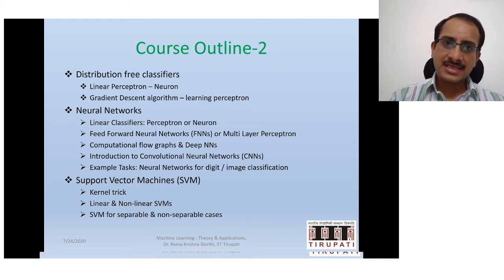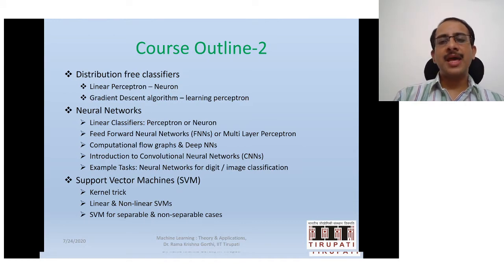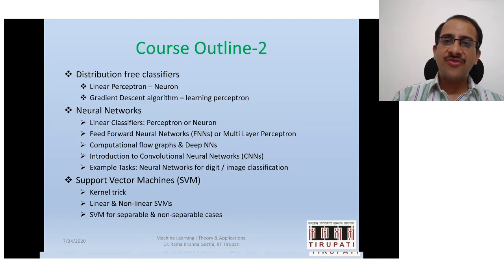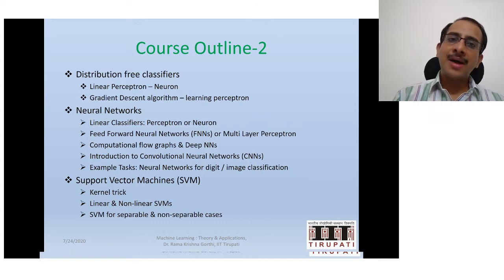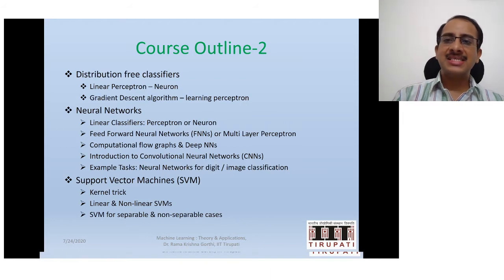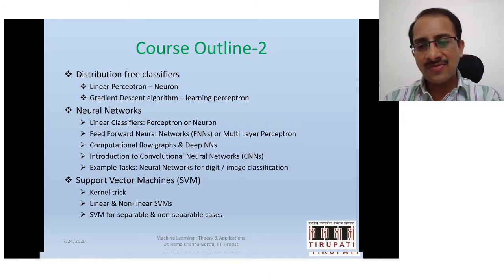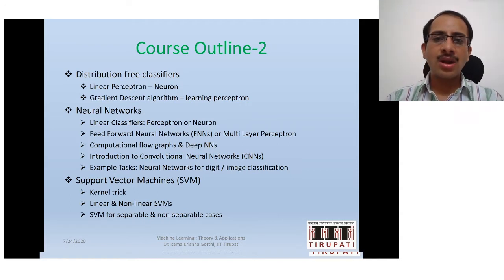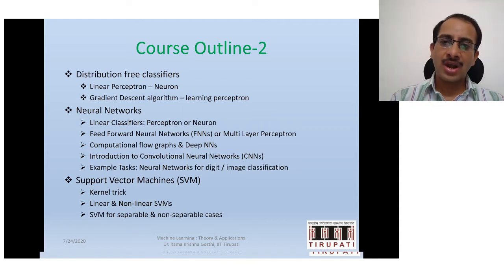After the discussion of statistical approaches for classification and dimensionality reduction techniques, we will have a discussion on distribution-free classifiers. These classifiers will enable us to find the decision boundary directly — the demarcation line or function that separates class 1, class 2, or several class samples. This discussion will be followed by the discussion on modeling a neuron artificially or mathematically, and feed-forward neural networks.